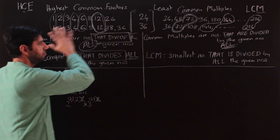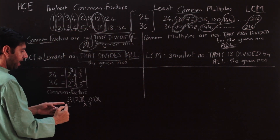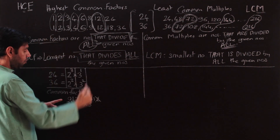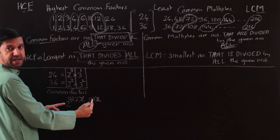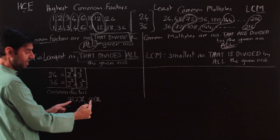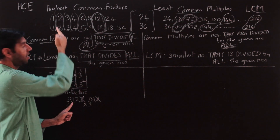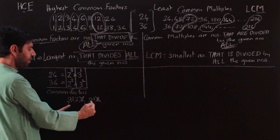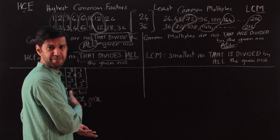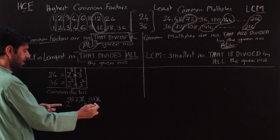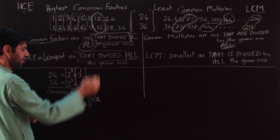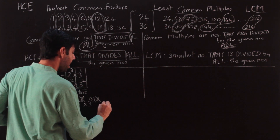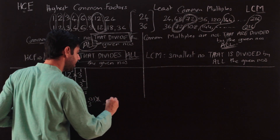Taking any combination of these powers gives all the common factors. For example: 2⁰ × 3⁰ = 1; 2¹ × 3⁰ = 2; 2² × 3⁰ = 4; 2¹ × 3¹ = 6; 2² × 3¹ = 12. This is the same method you've used when finding the number of factors.